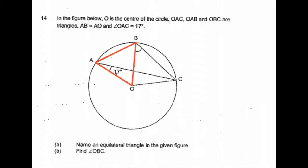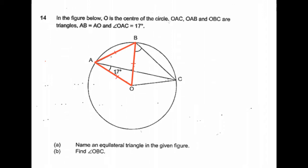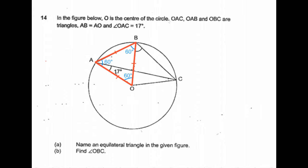We notice that OA is equal to OB, which are the radius of the circle, and AB is given to be equal to AO, which means ABO is an equilateral triangle. So let's mark each of those angles as 60 degrees and the answer to first part of the question is triangle ABO.